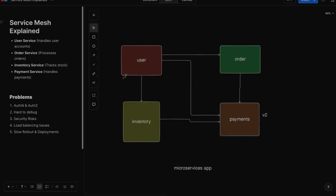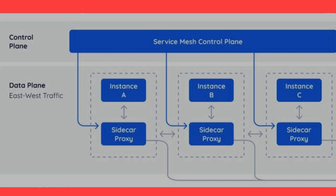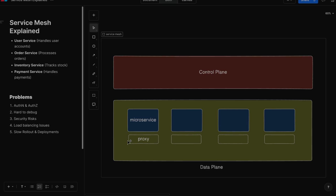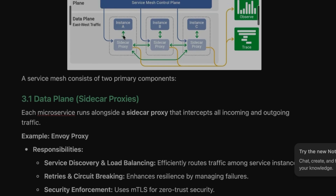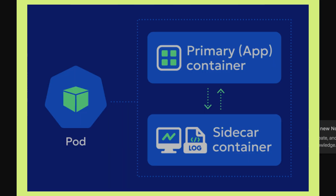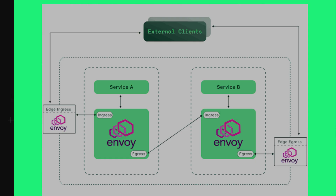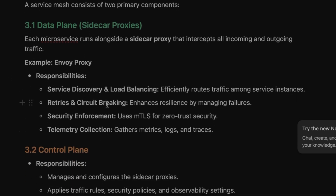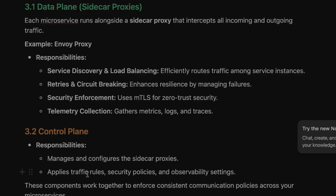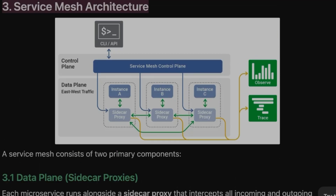The service mesh architecture consists of two important things: the control plane and the data plane. The data plane consists of each microservice running alongside a sidecar proxy — a sidecar is another container running with your microservice in a pod. A good example is the Envoy proxy used in Istio. The sidecar proxy handles authorization, authentication, observability, mutual TLS communication, load balancing, and canary deployments. The control plane manages the sidecar proxies and applies traffic rules, security policies, and observability settings.